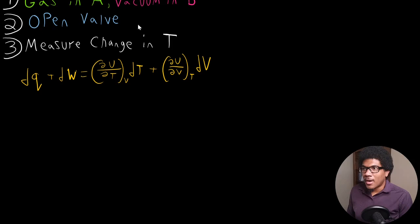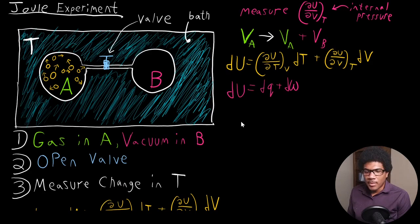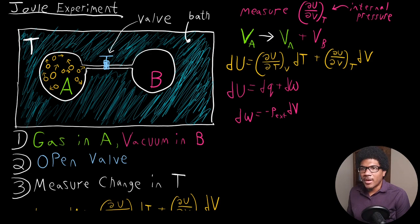So thinking back to our physical problem here, if we have initially in the Joule experiment a vacuum in B, which is just free space, an evacuated container, it cannot exert pressure on this gas. And our work, keep in mind that our work is negative P external times dV for an expanding gas.